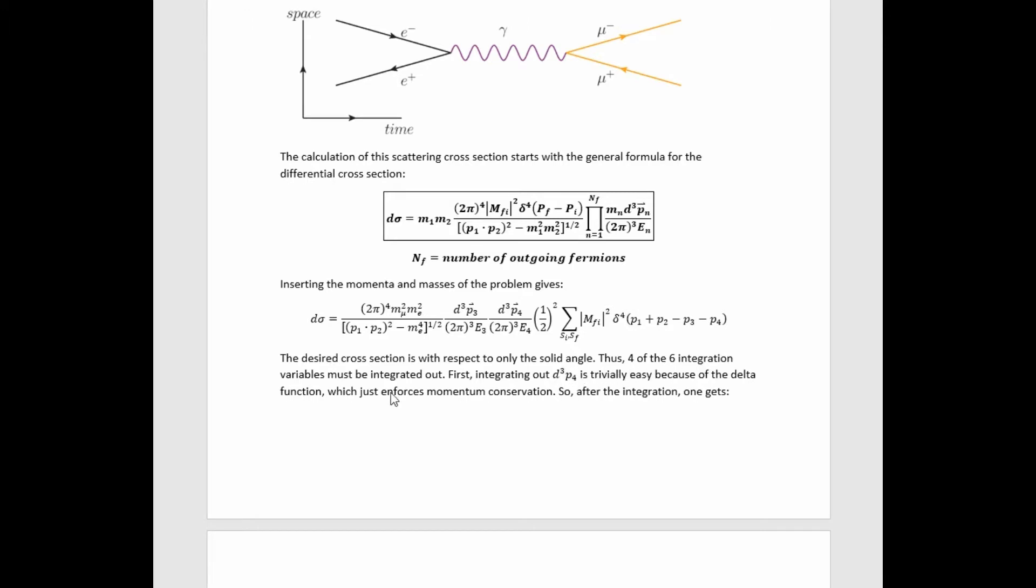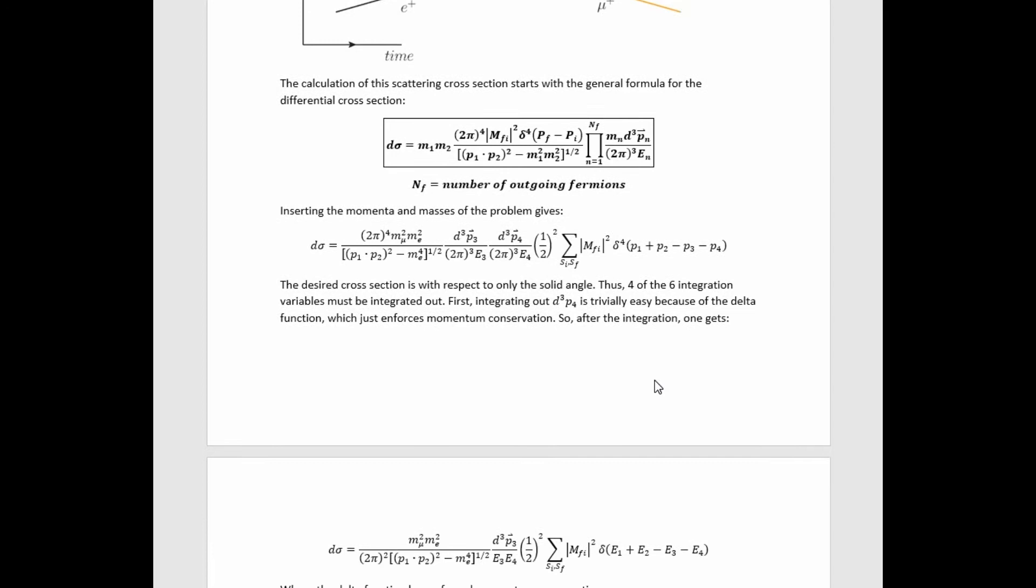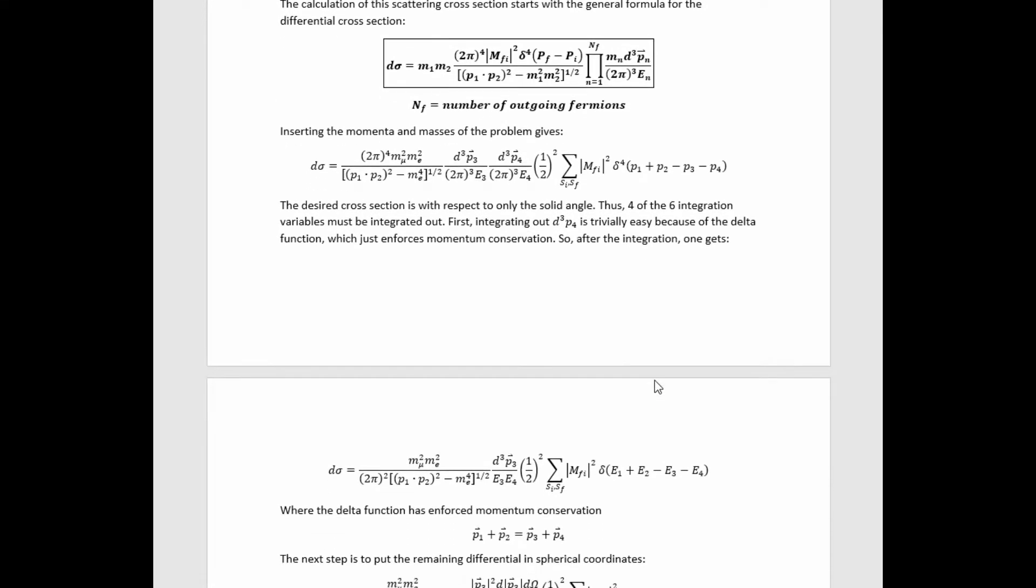Thus, four of the six integration variables must be integrated out. First, integrating out this volume differential is trivially easy because of the delta function, which just enforces momentum conservation.